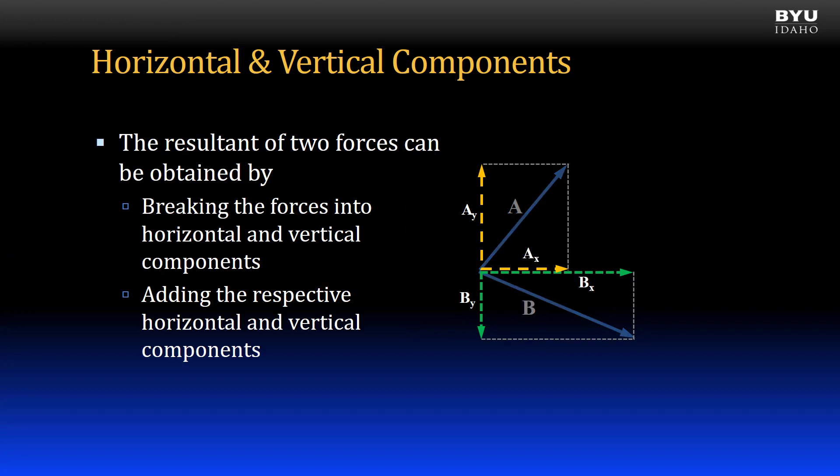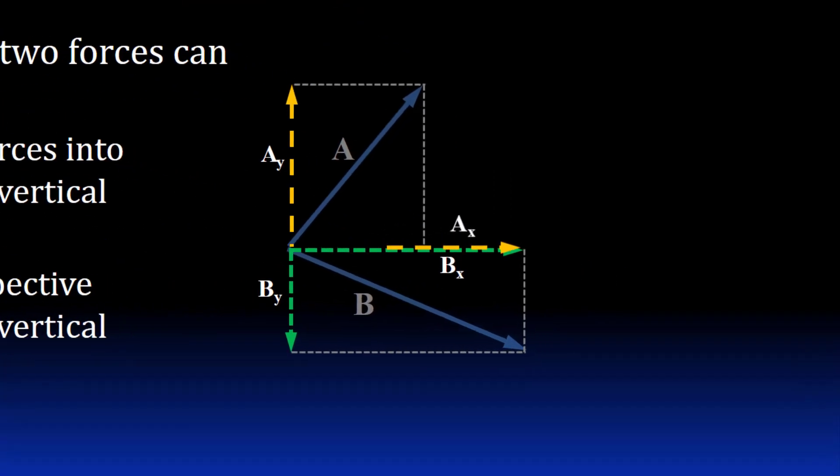Next, we add like components together. First, X components. We add AX and BX to get the red component of the resultant vector.